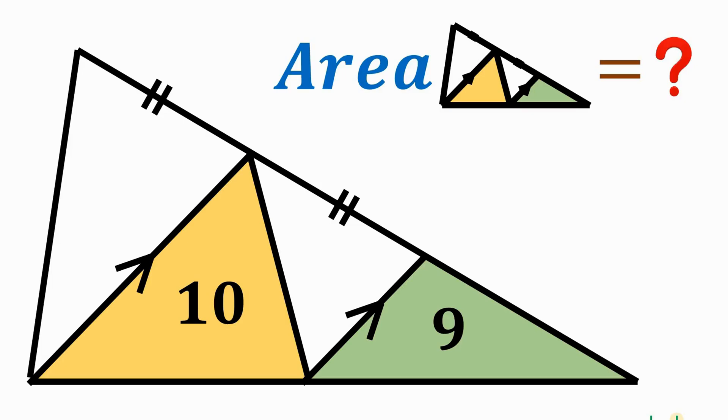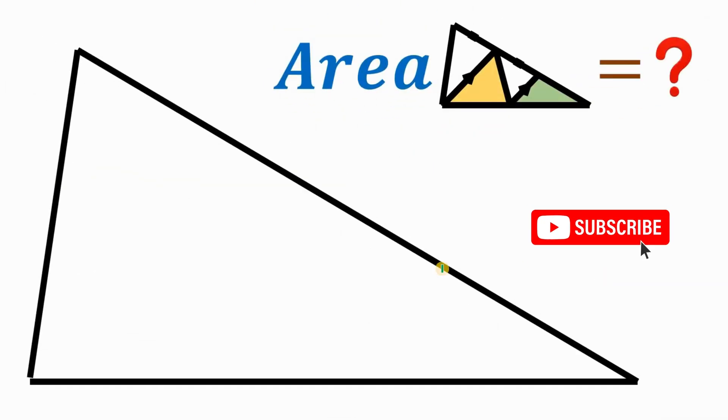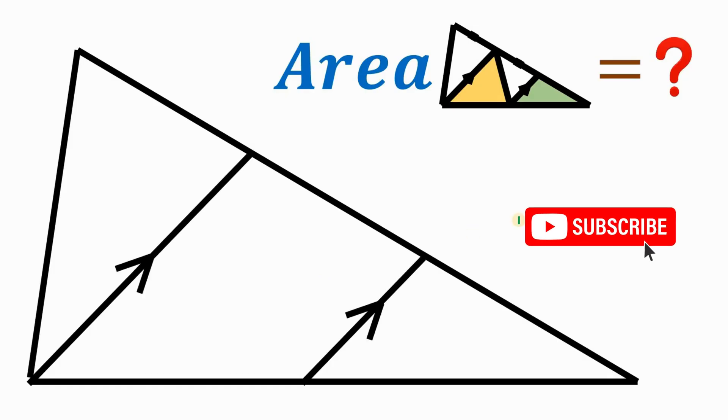Can you solve this geometry challenge? Here's the question. Given this triangle, now let's draw two parallel segments. And also take note, these two segments are equal. Now from this point to this point, let's connect those. And we created four triangles.